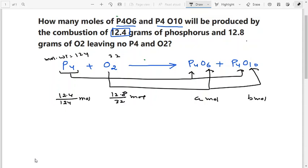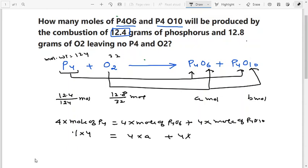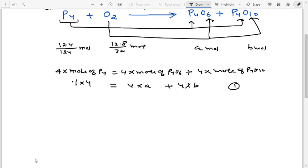When phosphorus is conserved, the equation is: 4 times moles of P4 equals 4 times moles of P4O6 plus 4 times moles of P4O10. This equals 0.1 times 4, which is 4a plus 4b. This is equation number 1.